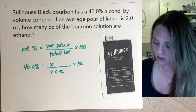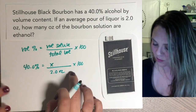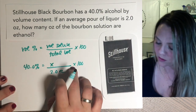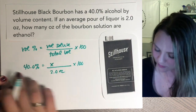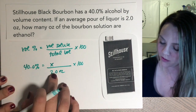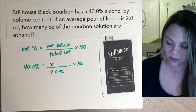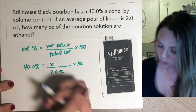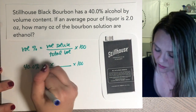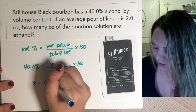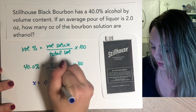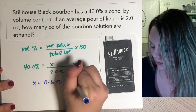You just do your simple math: divide both sides by 100, multiply both sides by 2. And you find that this is also 0.6 ounces of ethanol.